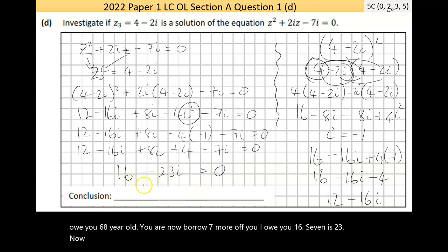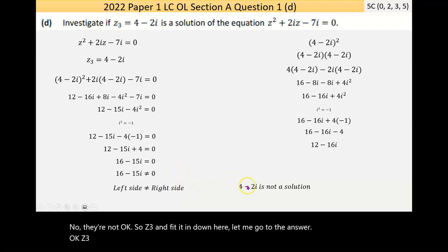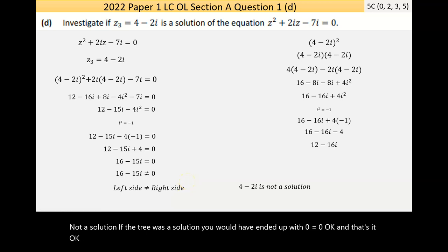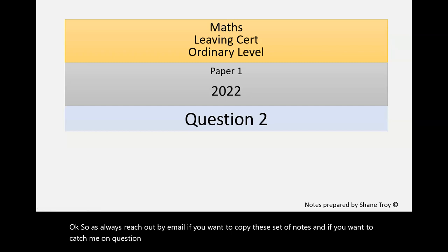Now is the left side equal to the right side? Well no they're not. So Z3, if I can fit it in down here, actually let me go to the answer. Z3 is not a solution. If Z3 was a solution you would have ended up with 0 equals 0. And that's it. So as always reach out by email if you want a copy of these set of notes, and if you want to catch me on question two just please like and subscribe in order to get access to the playlist. Thank you.